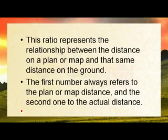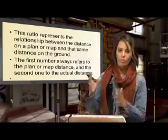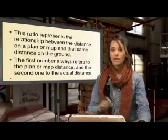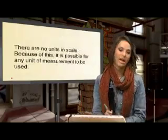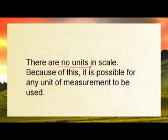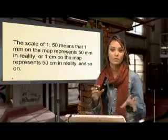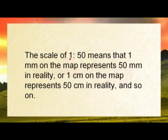The first number always refers to the map distance and the second one to the actual distance. So you'll see 1 to 50. That first one is the one on the map. The second one is the one in reality. The cool thing about scales is that there are no units in scales, and because of this, it's possible to do any unit of measurement. So it's very flexible and you can pick and choose which one works for you.